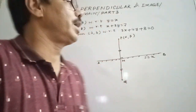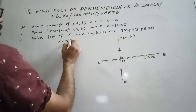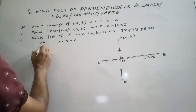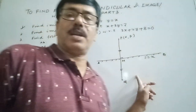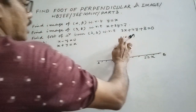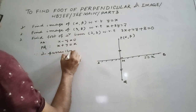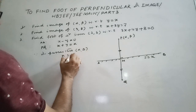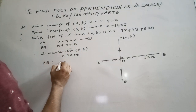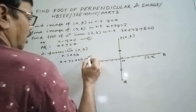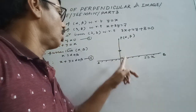Our main aim is to find the equation of PQ. PQ is perpendicular to AB, so x minus y = 0 is AB. Now what is PQ? It is perpendicular to AB, so PQ: x + y = k. Now k is to be determined using the condition that it passes through (α, β). Since it passes through (α, β), therefore k = α + β. So the equation of PQ will be x + y = α + β.